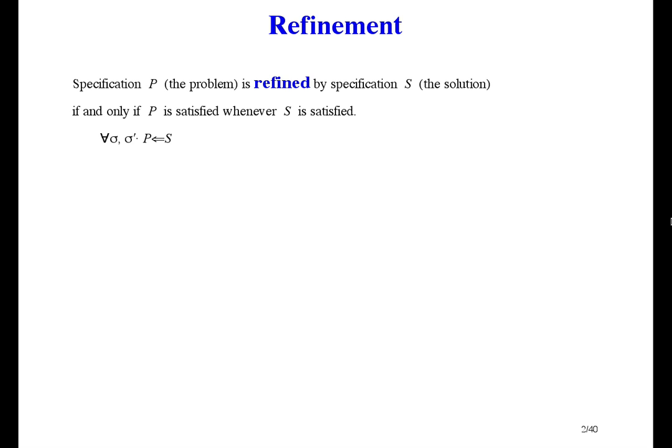If someone gives you a specification P and says please implement this, you can refine P, which means choosing an equal or stronger specification S, and implement S instead. That's because computer behavior that satisfies S also satisfies P, so the customer will be happy.